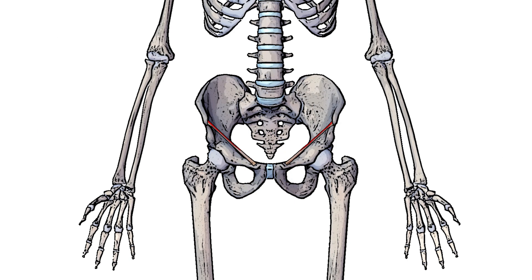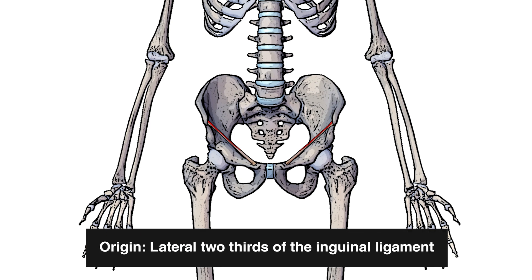Let's take a look at the origin, starting with the anterior side. Here you can see the inguinal ligament, which is a band of connective tissue extending from the anterior superior iliac spine of the ilium to the pubic tubercle of the pubic bone. The section I've marked out in red is the origin of the internal oblique muscle — specifically the lateral two-thirds of the inguinal ligament.